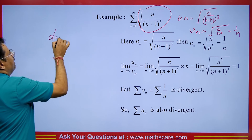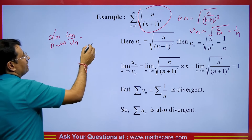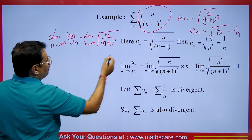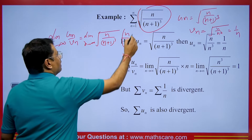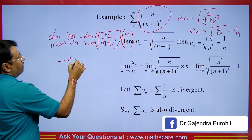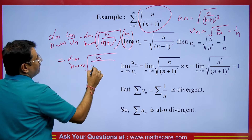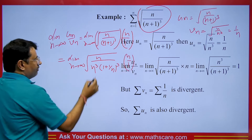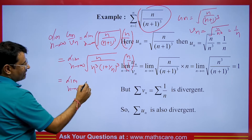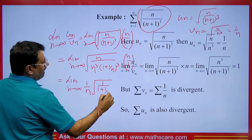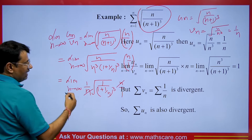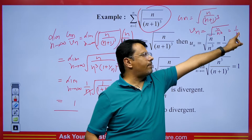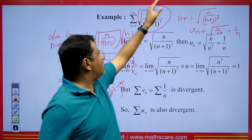Take the limit n tends to infinity of un upon vn. un is n upon the cube root of (n+1), divided by vn which is 1 upon n, so n comes to the numerator. Taking n cube as common from the denominator gives n times the cube root of (1 plus 1 by n). One n cancels, leaving the limit n tends to infinity of n squared times cube root of 1 upon (1 plus 1 by n). As n tends to infinity the 1 by n terms go to 0, giving a value of 1. Since summation of 1 upon n is a divergent series by p-series, this series is also a divergent series.